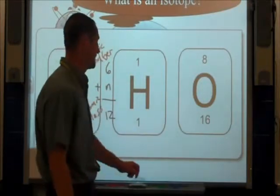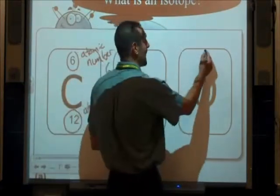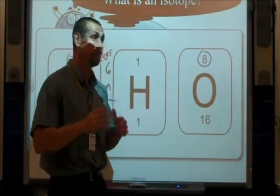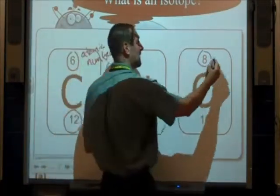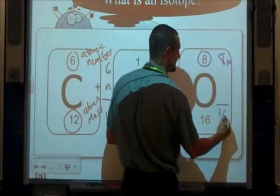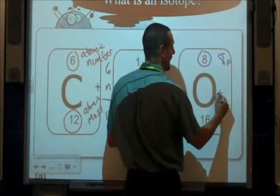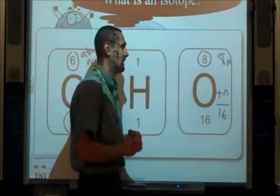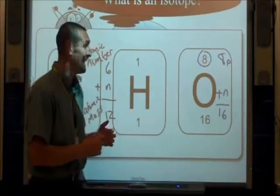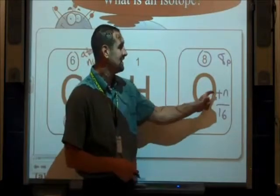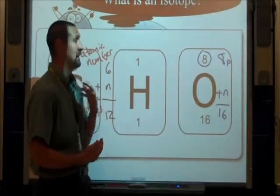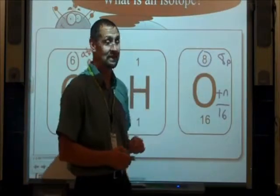What about oxygen? Oxygen has eight protons. So if it's a neutral atom, that means it's also going to have eight electrons. So if I have eight protons and the atomic weight is 16, eight plus how many neutrons equals 16? Well, eight plus eight equals 16. So there's eight neutrons there. Eight protons, eight neutrons, and if it's a neutral atom, eight electrons.